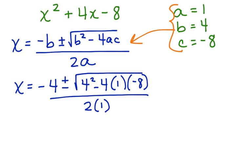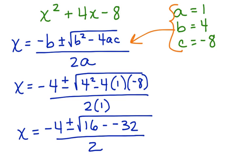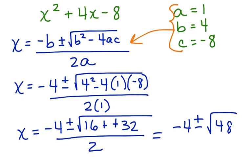Now let's take it another step further to solving for x. x is equal to negative 4 plus or minus the square root of 16 minus negative 32, which we can turn into a positive, divided by 2. Taking it one step further, we have negative 4 plus or minus the square root of 48, divided by 2.